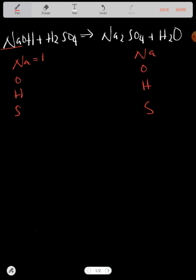The question is, how many sodium atoms do you have this side? One. Oxygen: you have one. Hydrogen: you have one here plus four, that's five. Sulfur: you have one.